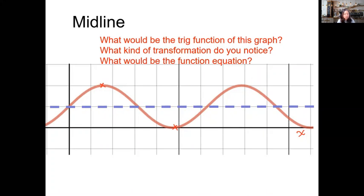You can ask yourself questions and figure out what d value in the equation should be changed based on the current graph, after it was transformed by a vertical shift or vertical translation.